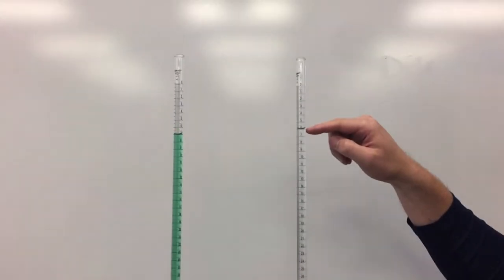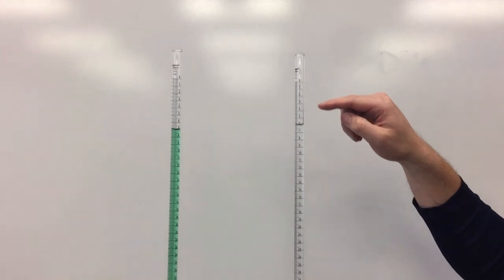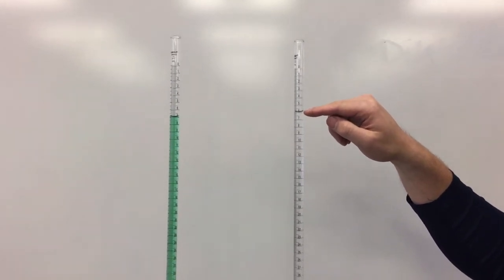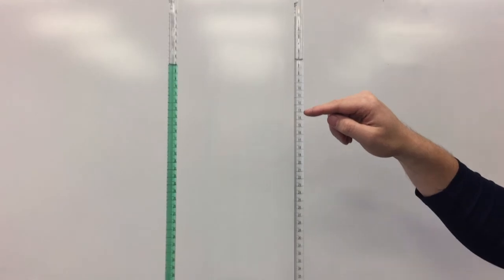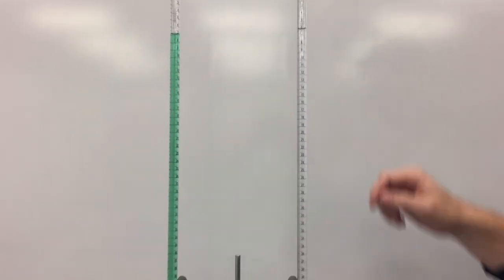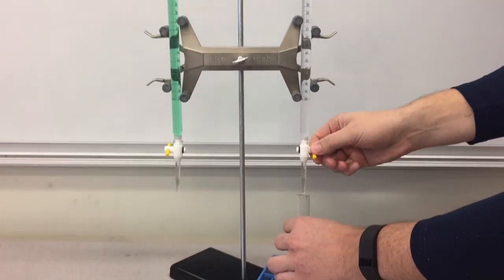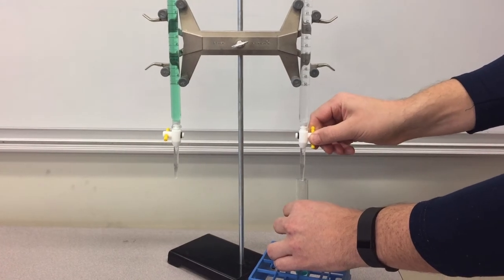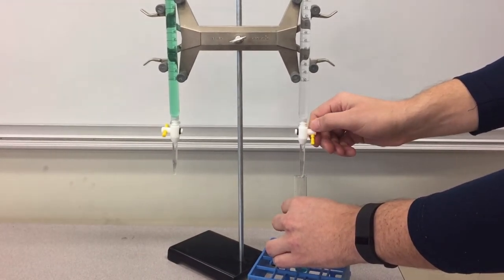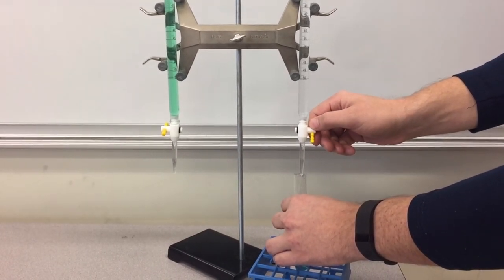Then we'll use the burette containing the water to deliver about 6 milliliters of water, bringing the total volume of liquid in the test tube up to 10. After we've delivered 6 milliliters of water into the test tube, we'll take a final burette reading and record this in our notebook.